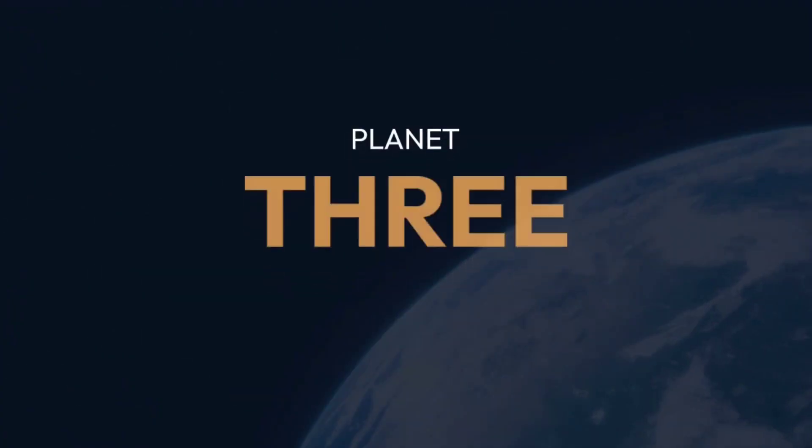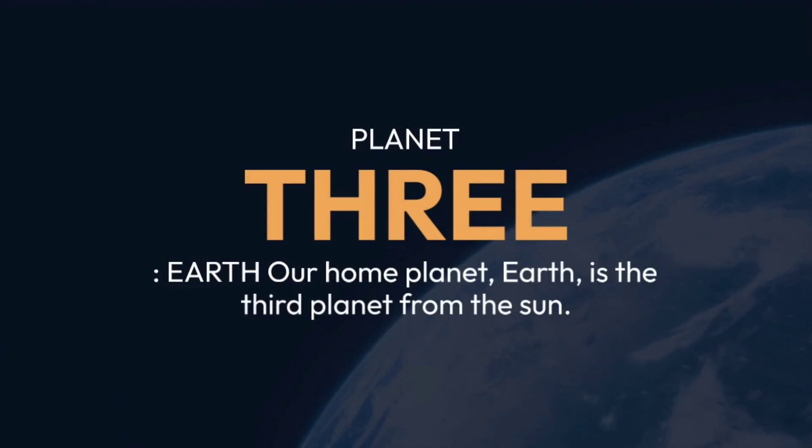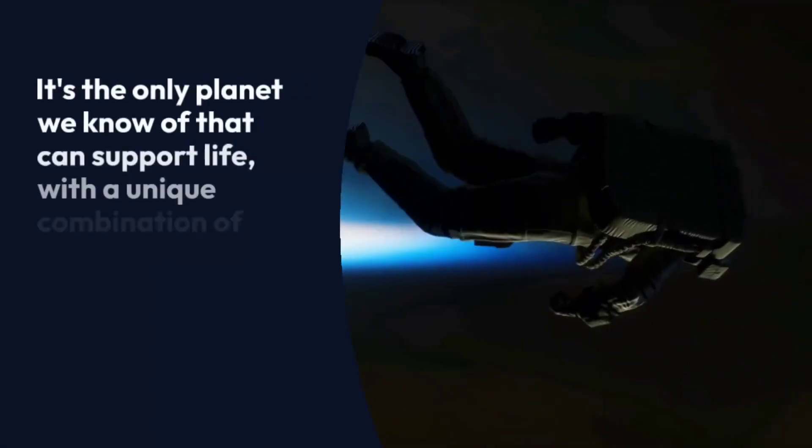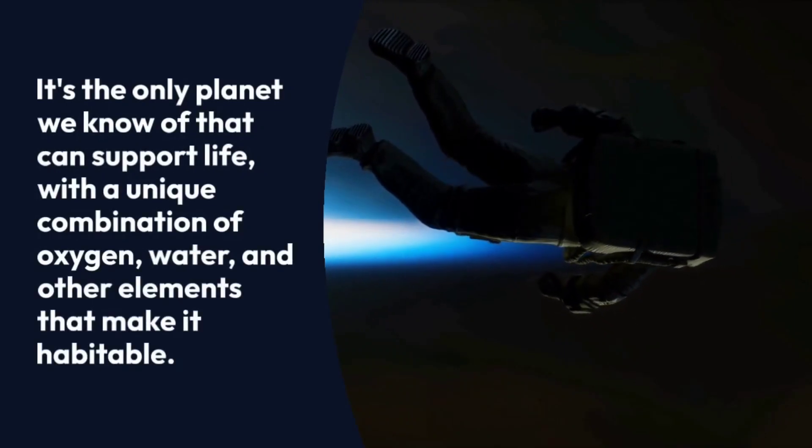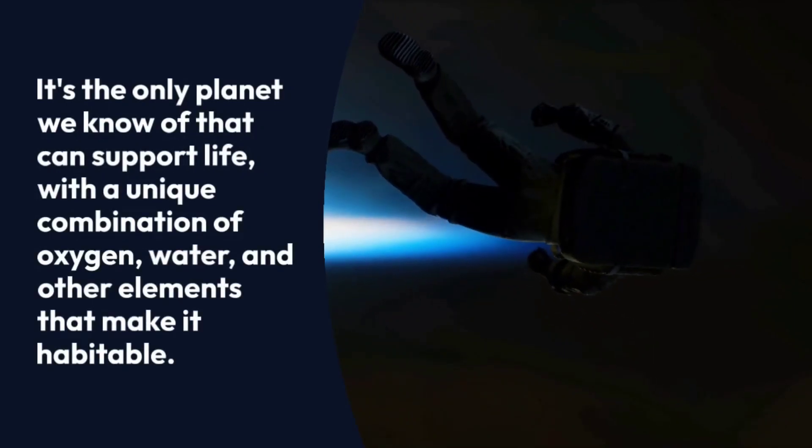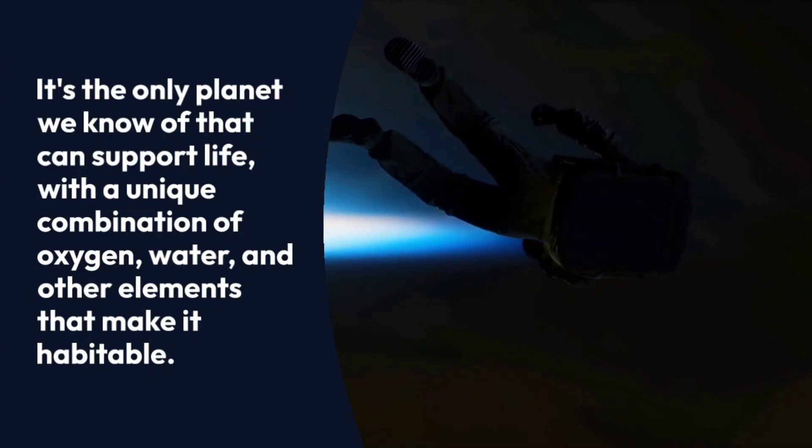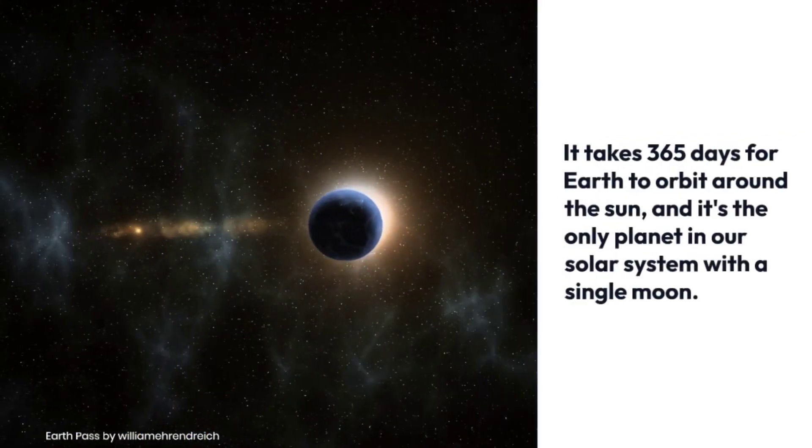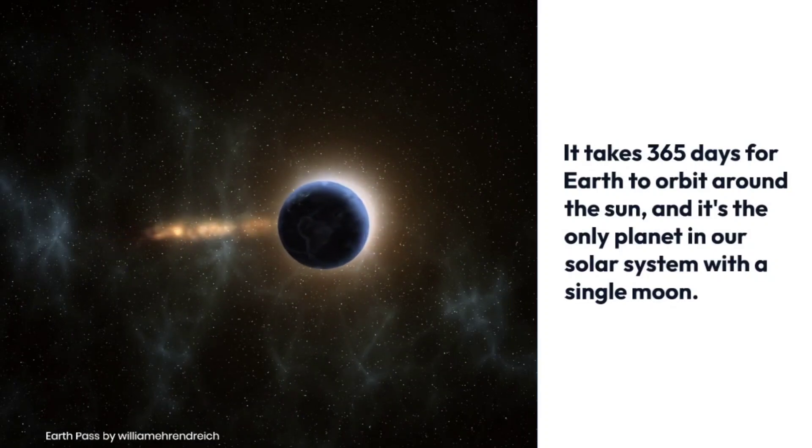Planet 3: Earth. Our home planet, Earth, is the third planet from the sun. It's the only planet we know of that can support life, with a unique combination of oxygen, water, and other elements that make it habitable. It takes 365 days for Earth to orbit around the sun, and it's the only planet in our solar system with a single moon.